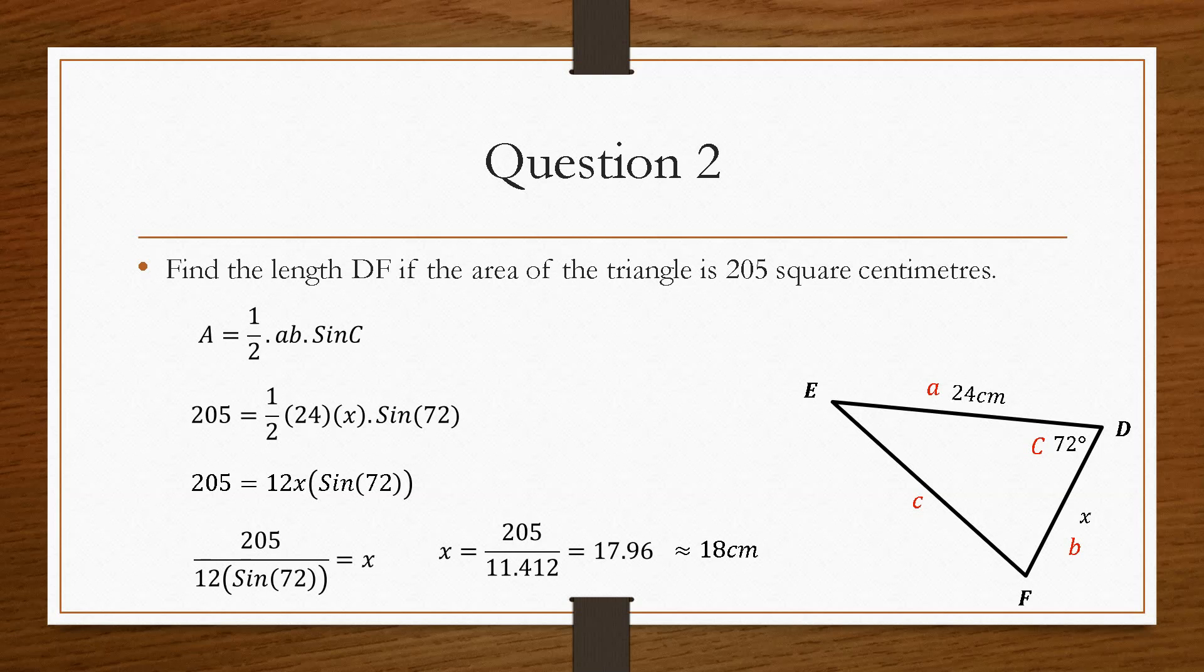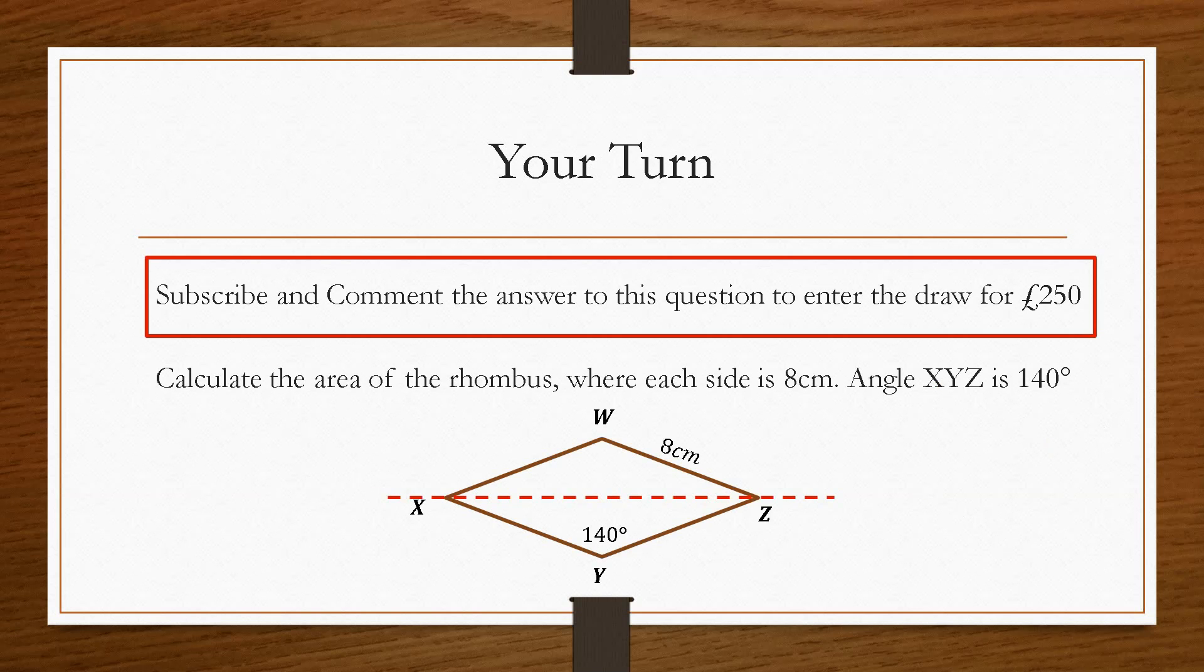And that's how you would go about solving the area of a triangle. Now it is your turn. In order to enter the £250 draw each month starting in January, all you have to do is answer this question correctly, make sure you are subscribed to the channel, and then comment your answer on the video below. Only valid subscribers with the correct answer will be entered into the draw.